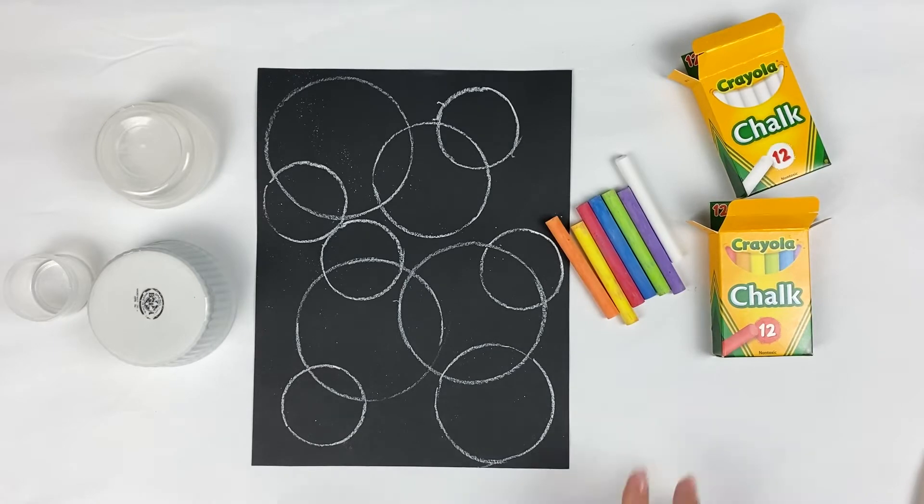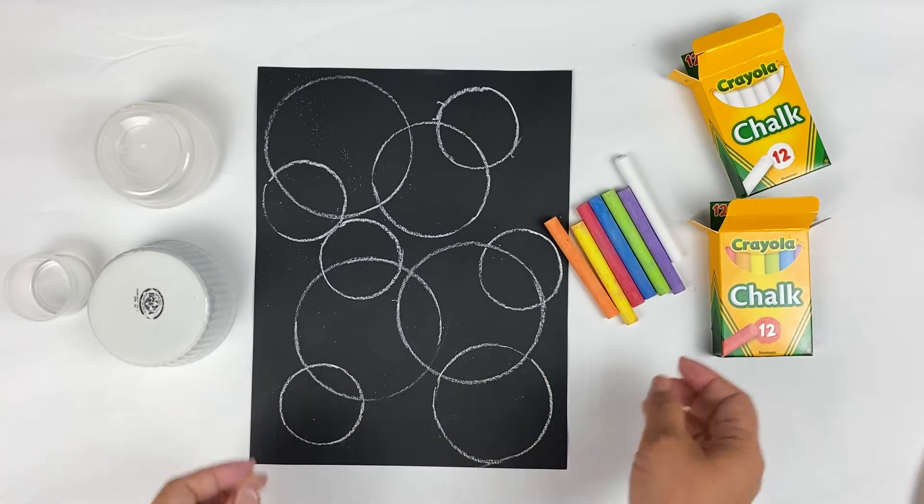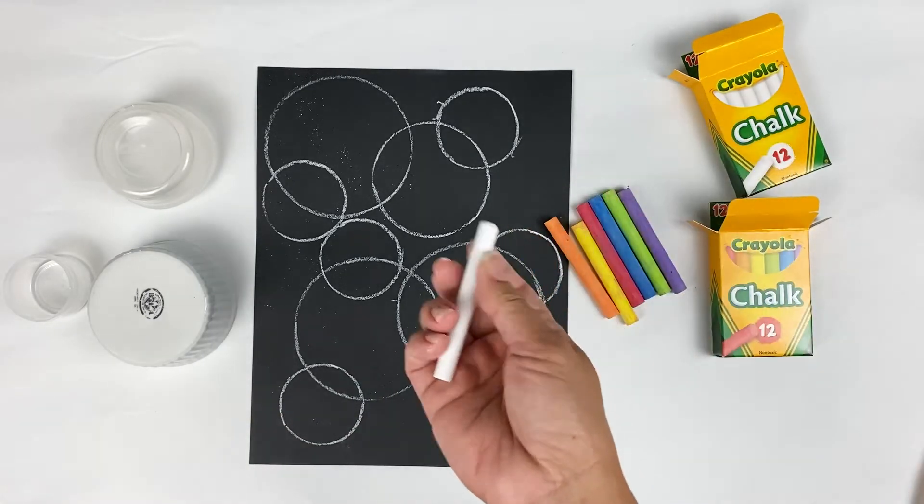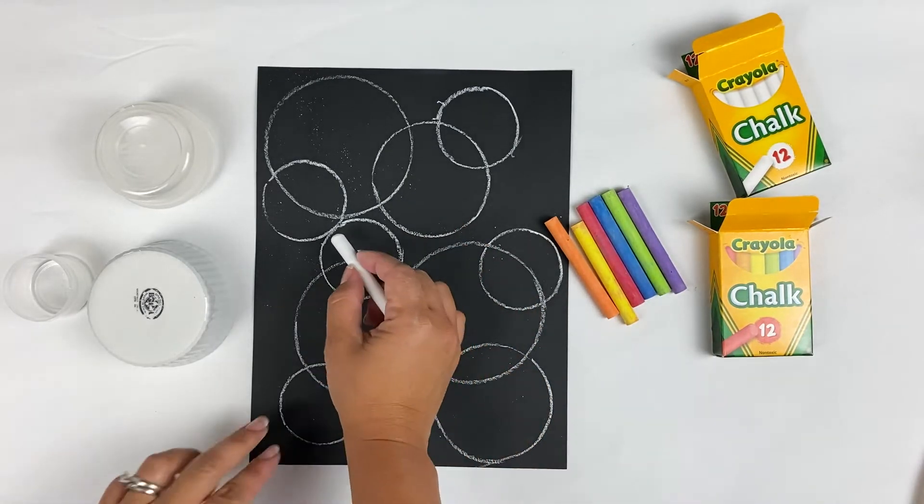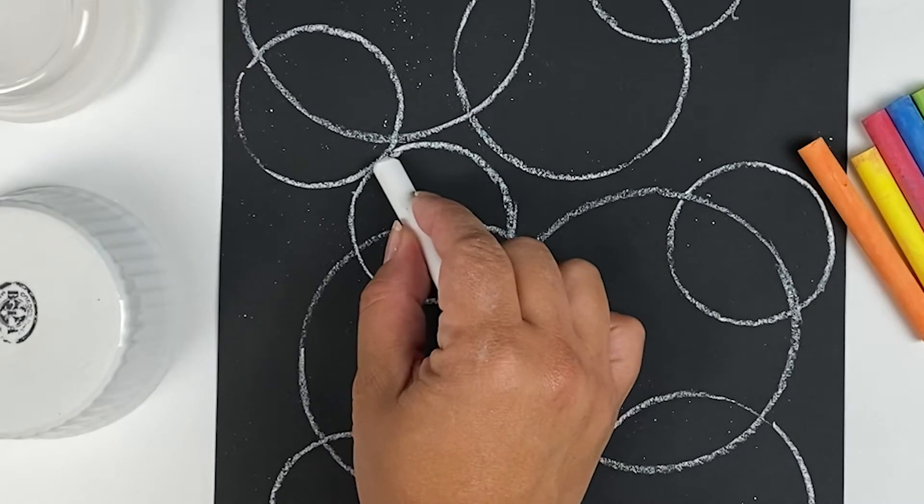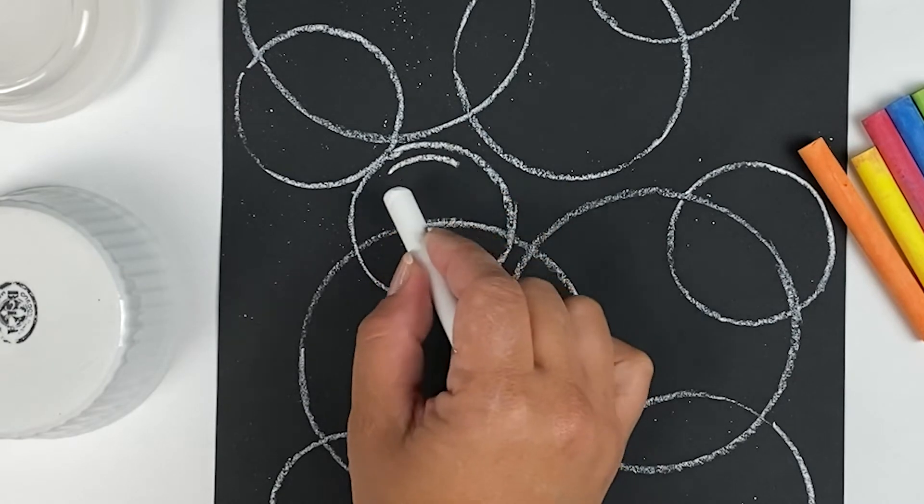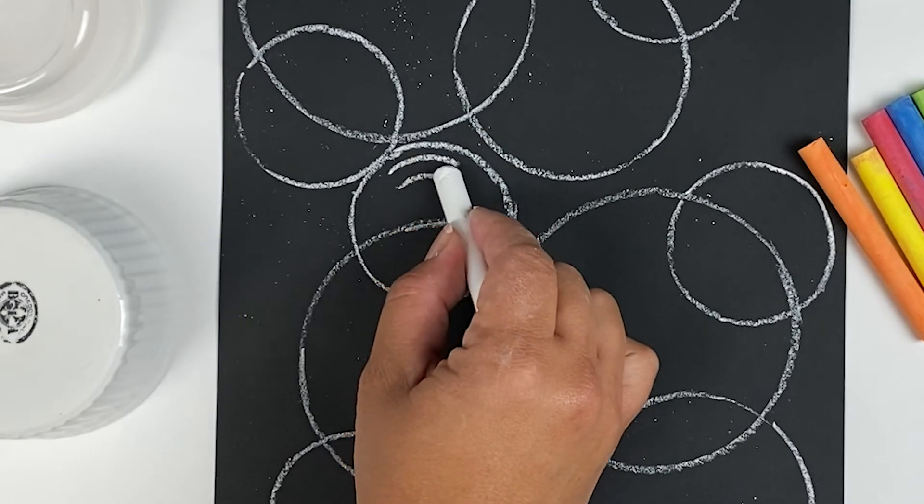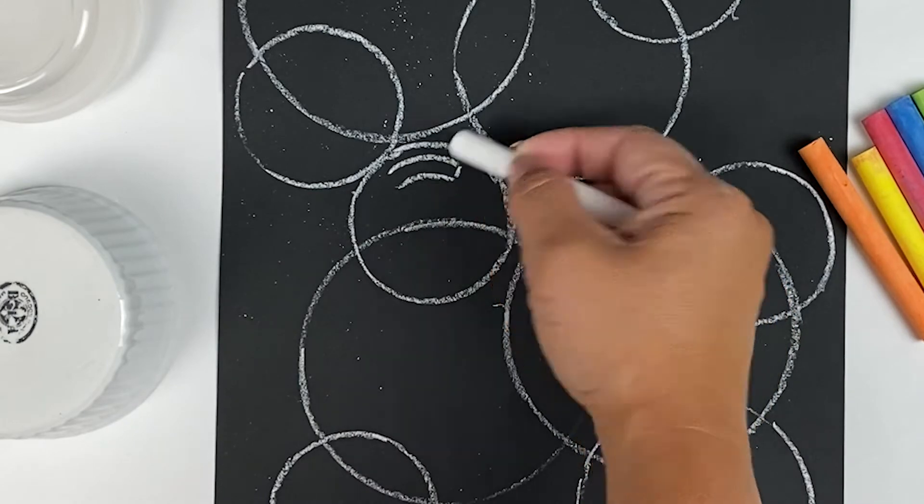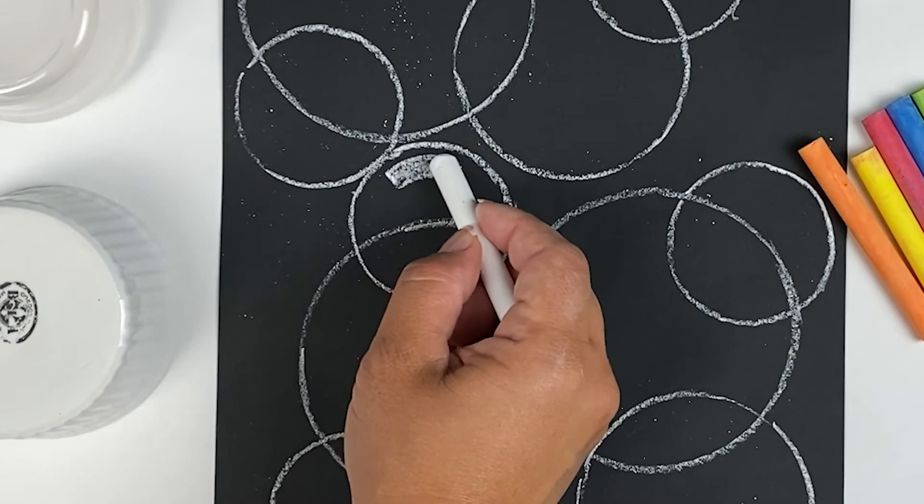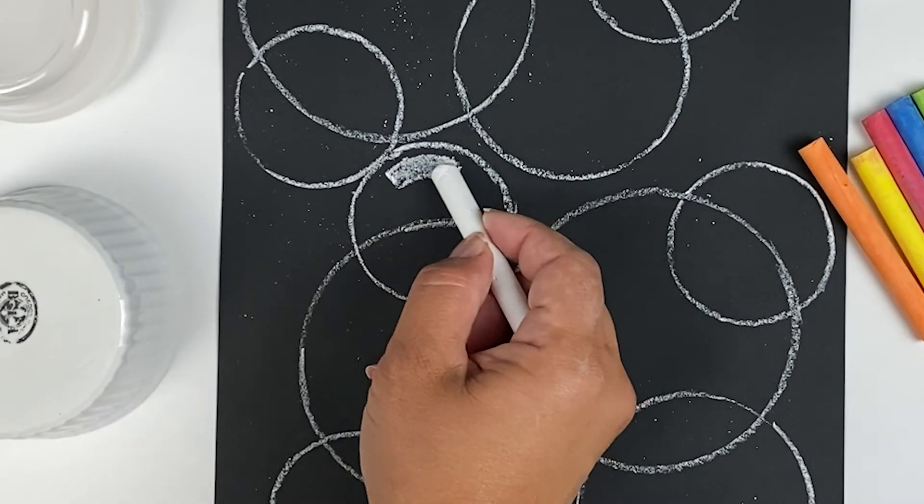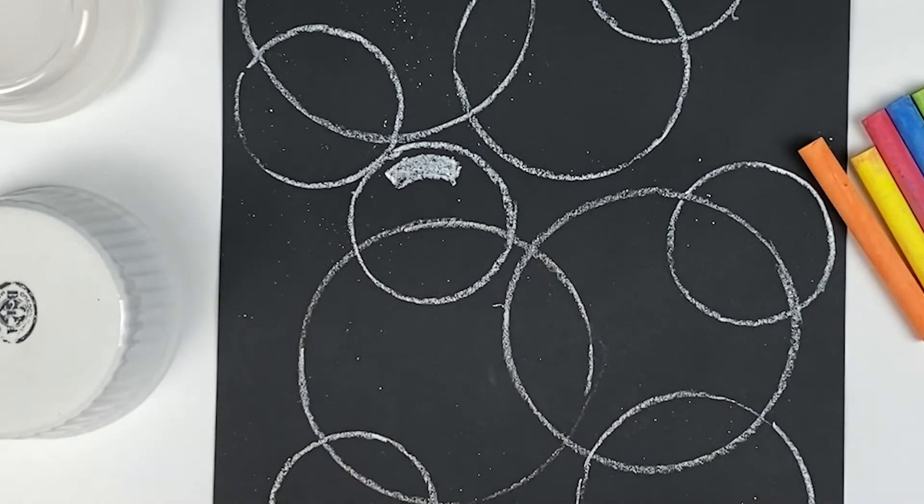So when you're happy with how many circles you have on your paper, we're going to start highlighting our bubbles. Taking the white, we're going to start with that, and you just make a curve and another smaller curve under it. And you attach it both sides and you fill it in. And that is the basic shape of the highlight.